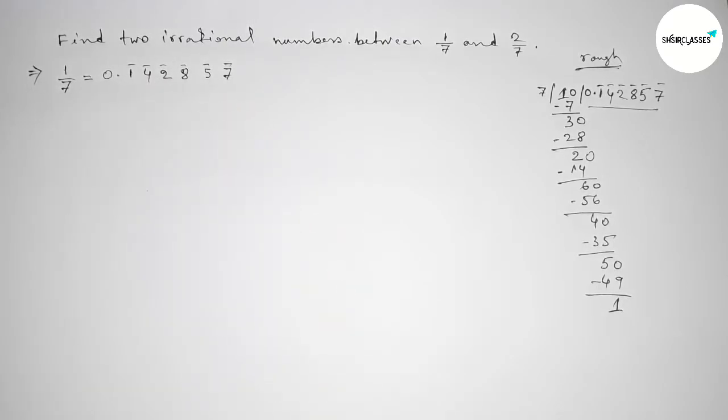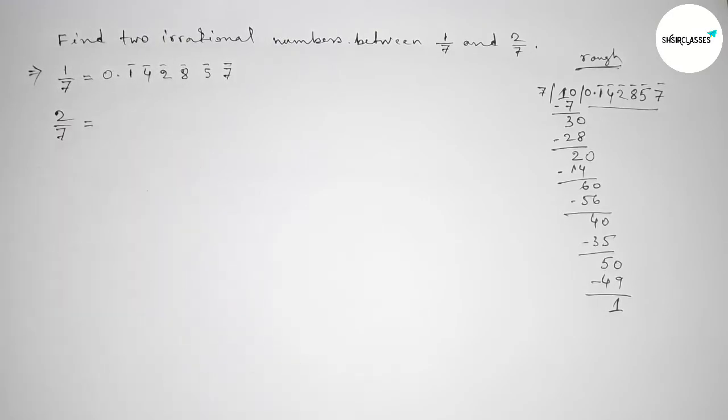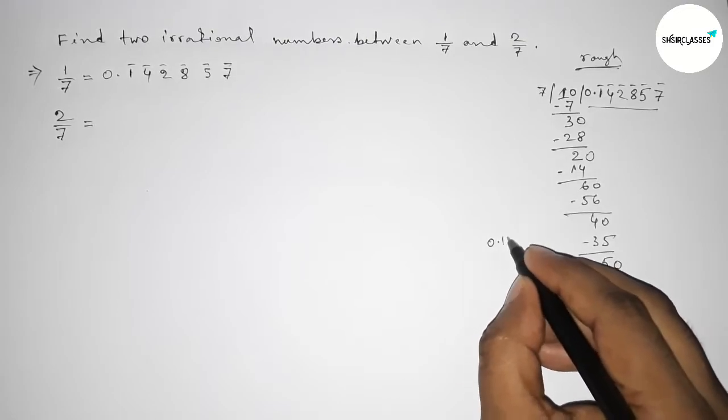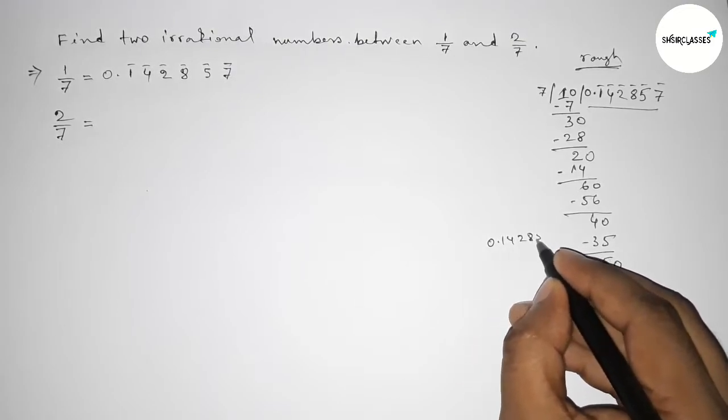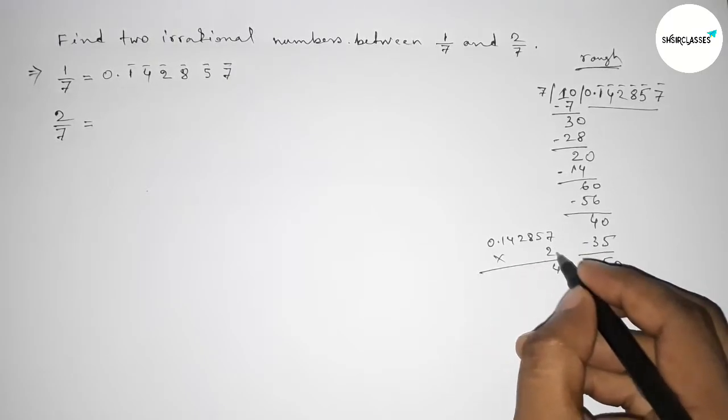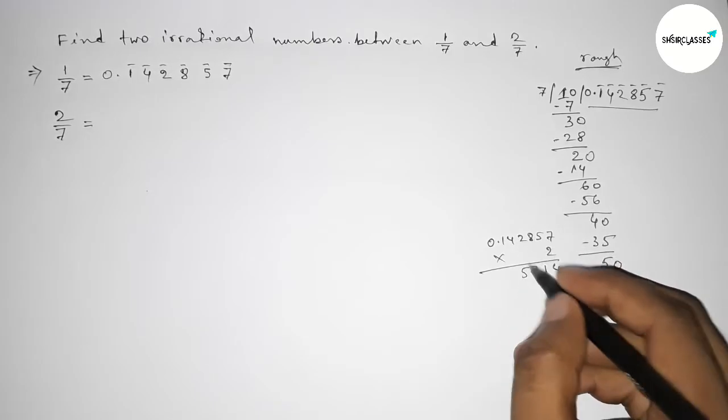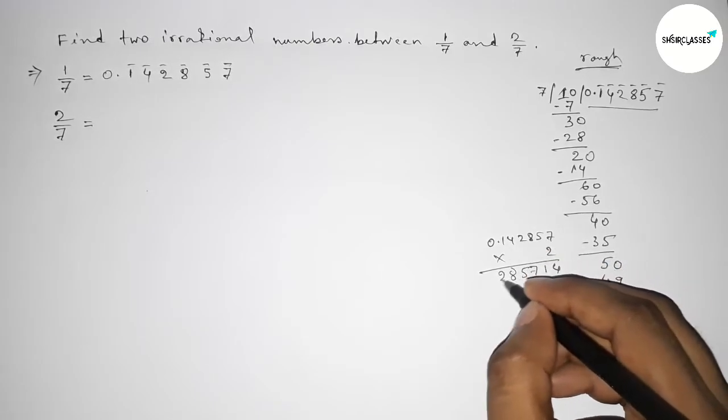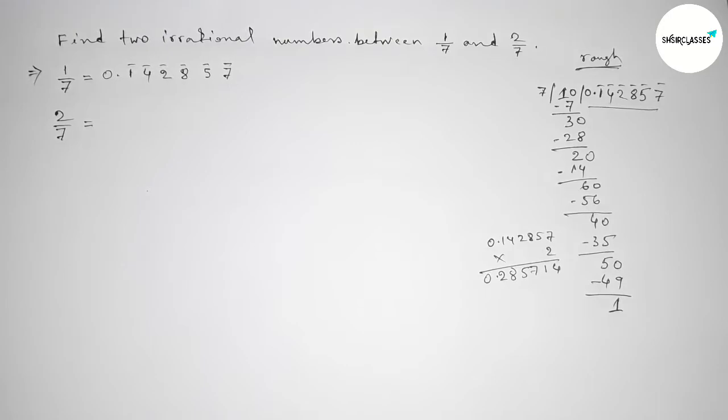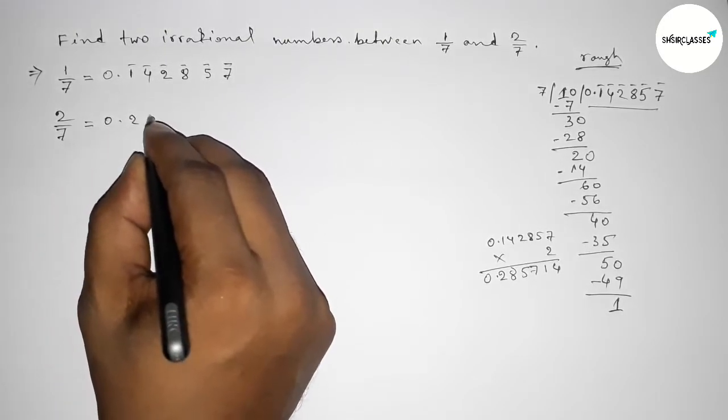Okay, now finding the value of 2/7. So if you want to find the value of 2/7 by division method, then that's your homework. Now here simply multiplying by 2 with the decimal, then we can get here another recurring decimal. So this is 0.285714, and this is also a recurring decimal.